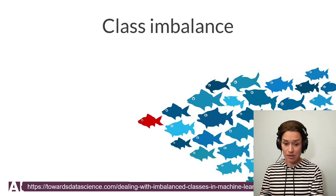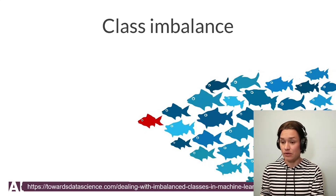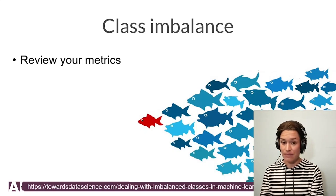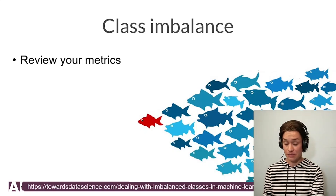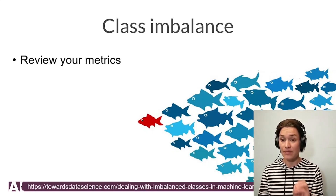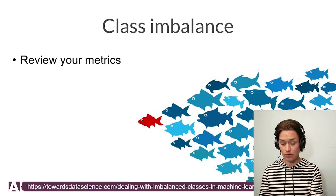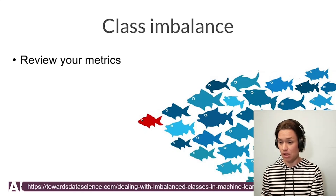What we can do to help the algorithm perform better: we can review the metrics we are using to see if our algorithm is doing a good job. We have to have an appropriate metric for what we want the algorithm to be doing.